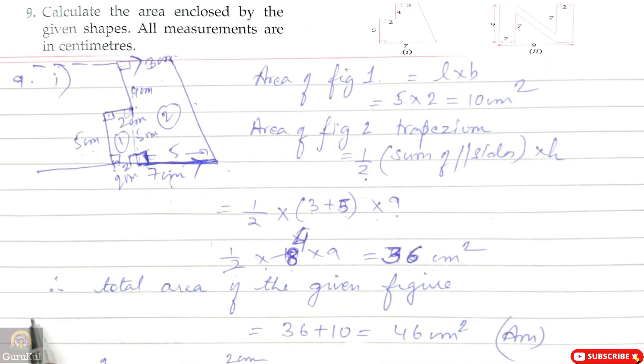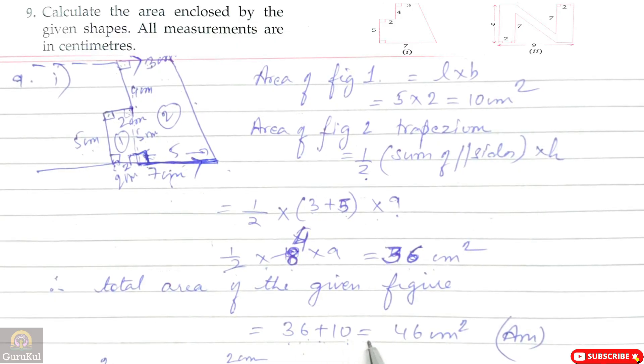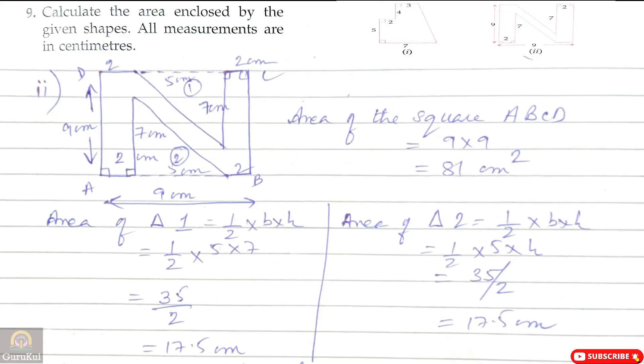Total area of the figure = 36 + 10 = 46 cm square. And this is the answer. Now the second part of question number 9.